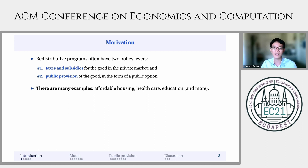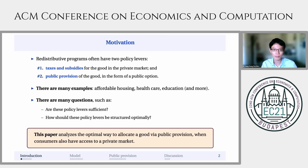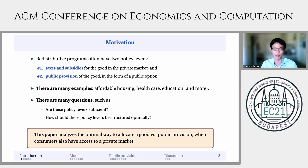In these settings, many questions arise. For example, we might ask if these policy levers are sufficient, or how these policy levers should be structured optimally. In this paper, I answer these questions by analyzing the optimal way to allocate a good via public provision, when consumers also have access to a private market.